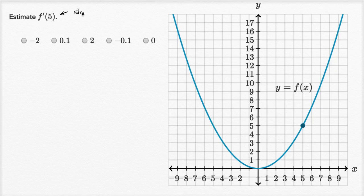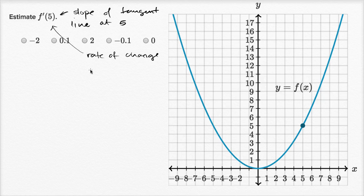And when we say f prime of five, this is the slope of tangent line, tangent line at five, or you could view it as the rate of change of y with respect to x, which is really how we define slope, with respect to x of our function f.